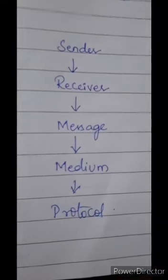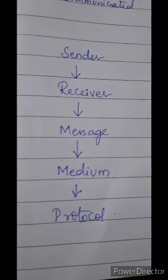The fourth component is medium — medium is the physical path by which the message travels from sender to receiver, and it consists of a wireless transmission medium. The fifth component is protocol — protocol is a set of rules that governs data communication. Without a protocol, two devices may be connected but they cannot communicate with each other.